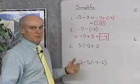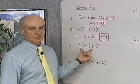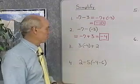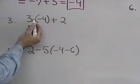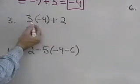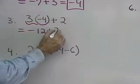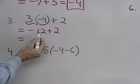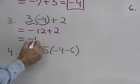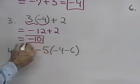Moving on down to our next problem here, problem number 3. We're going to use the multiplication before addition. I have multiplication here and addition here, so I want to multiply first. 3 times negative 4 is negative 12 plus 2, and then adding negative 12 and positive 2, I end up with negative 10.